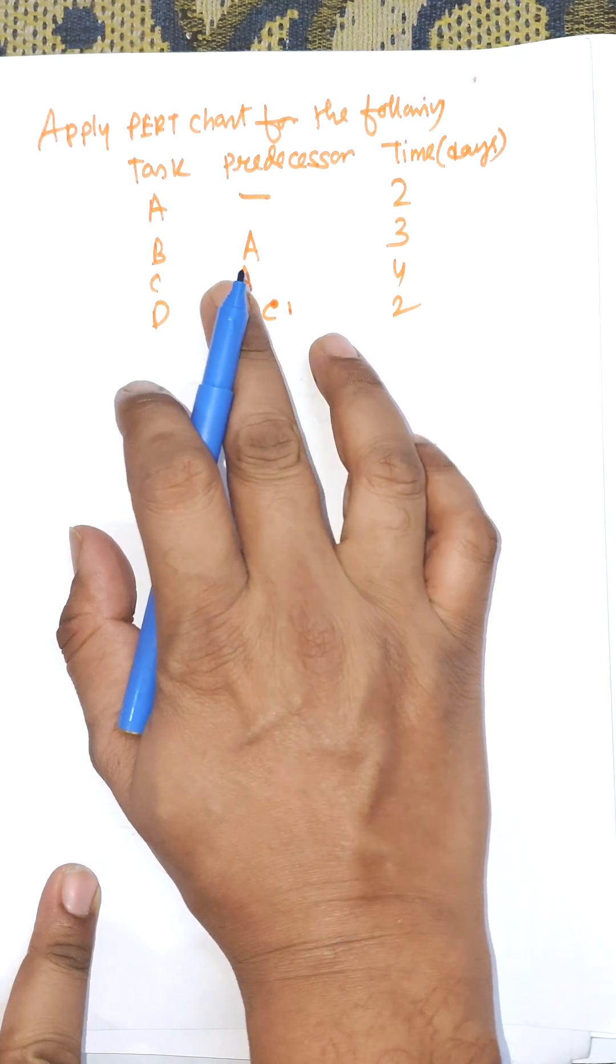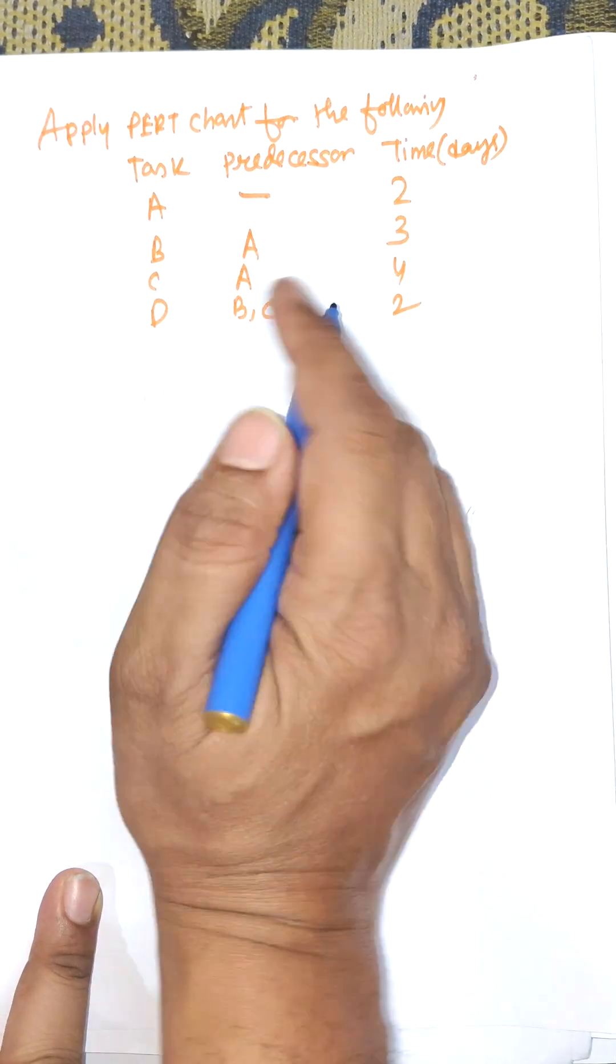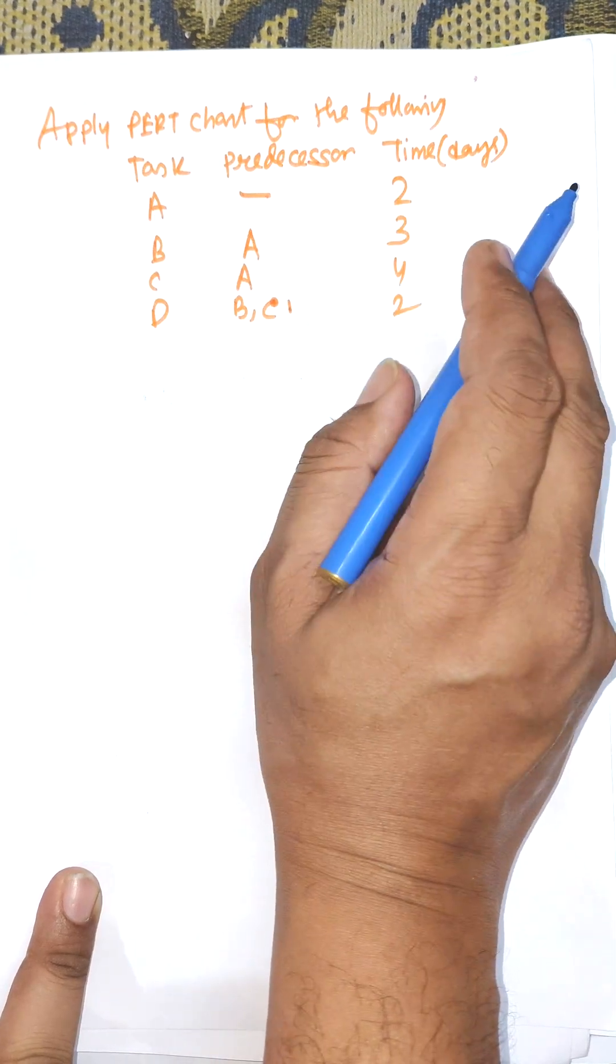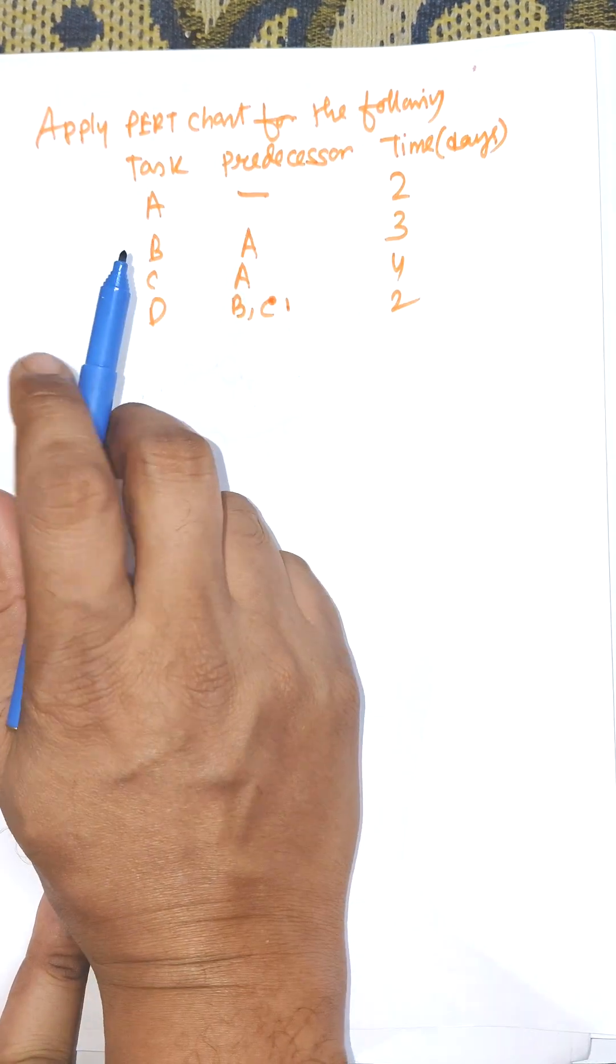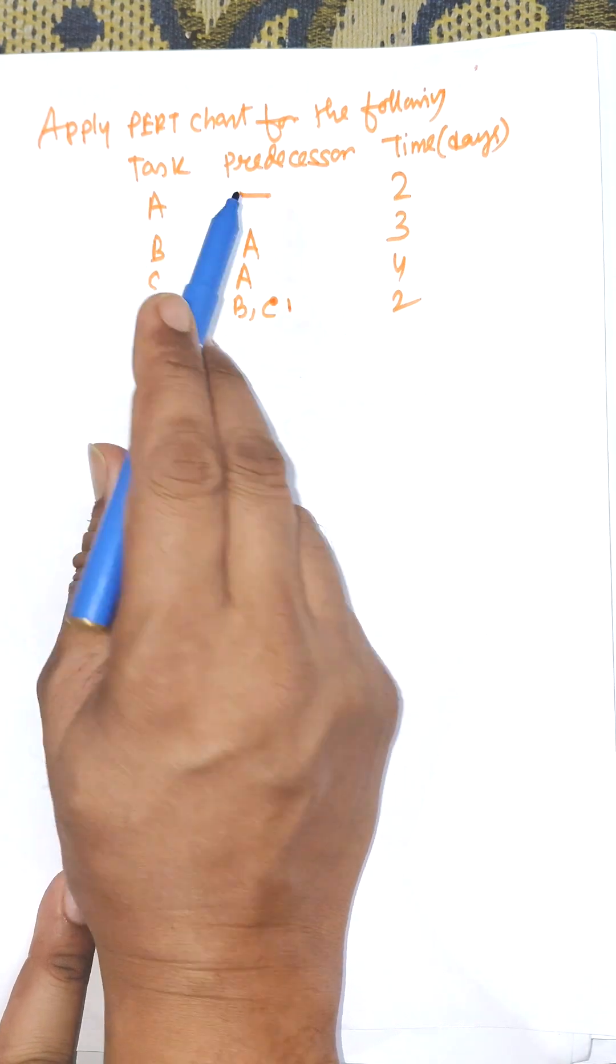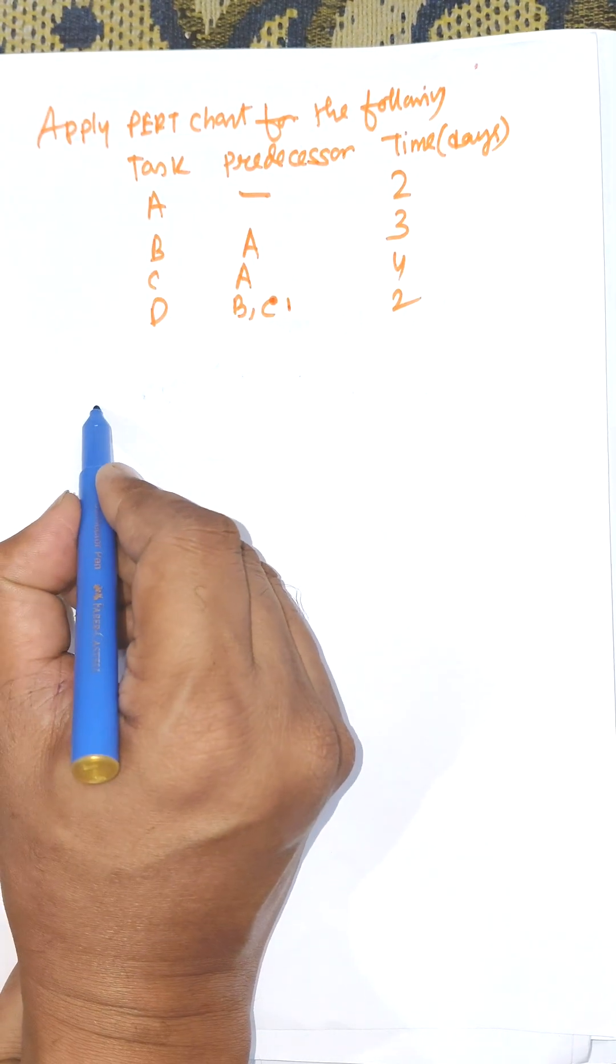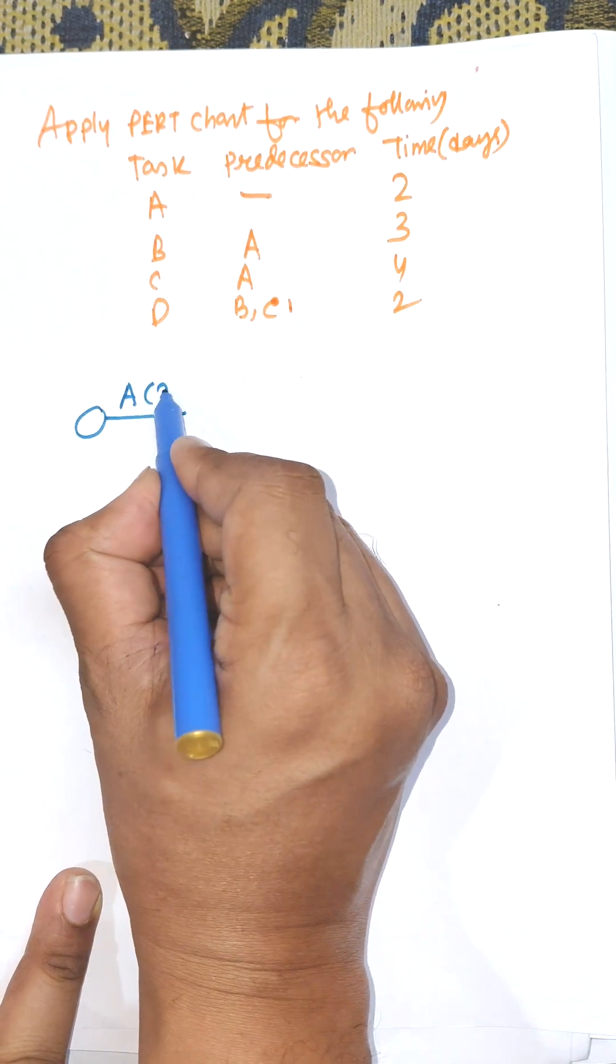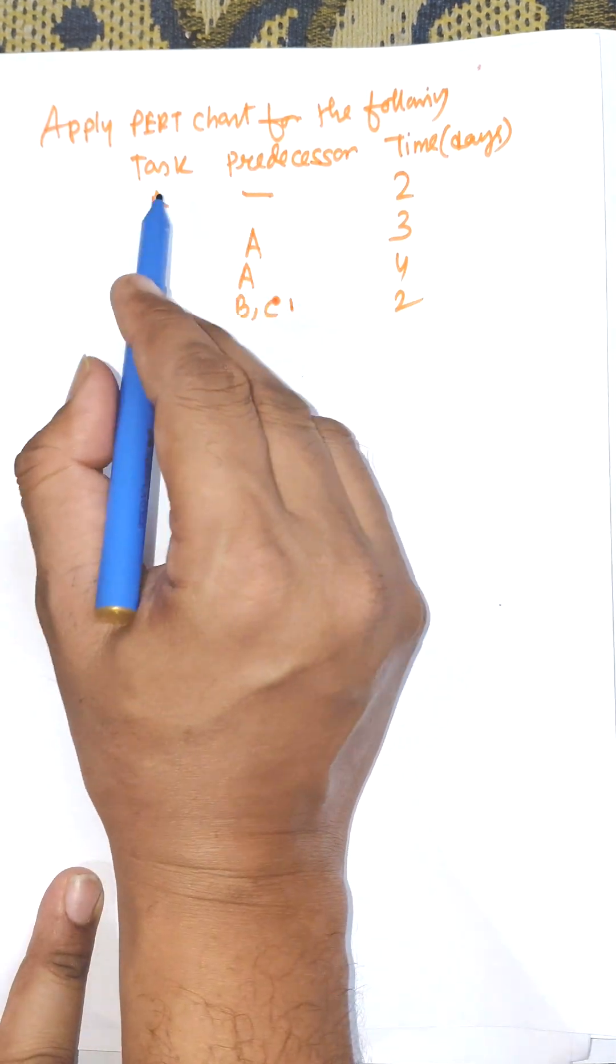Hi everybody, in this video I am going to apply PERT chart for the following table. Here tasks are given: A, B, C, D. Predecessors are given and time in days. The tasks whose predecessors is empty will be considered as starting tasks, so here A is considered as starting task and duration of A is two days.